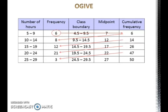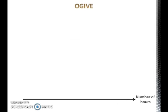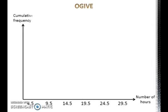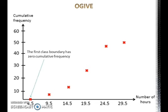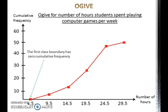After the cumulative frequencies are found, plot the class boundary on the horizontal axis and the cumulative frequency on the vertical axis. Then plot a dot for each class boundary at the height corresponding to its cumulative frequency. Note that the first class boundary has zero cumulative frequency. Connect the dots with straight lines. Lastly, write the title of the ogive.